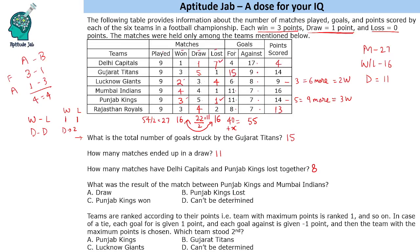What was the result of the match between Punjab Kings and Mumbai Indians? Mumbai Indians has won 4, drawn 4, lost 1. Punjab Kings has 3 wins, 5 draws, 1 loss. Each team played 9 matches but we are not told how many times each team played against each specific opponent — it could be 1, 2, or 3 matches. Even if there was only one match between them, no such information can be determined from the given data. So the answer is: cannot be determined.